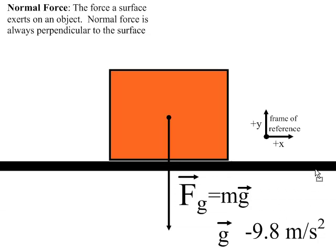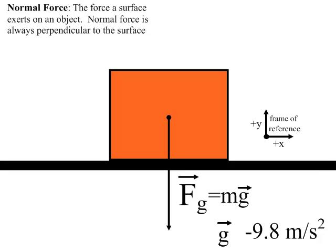What happens though if an object comes to rest on a surface? Newton's second law tells us that if it comes to rest, forces must be balanced, so that tells us there's another force involved.